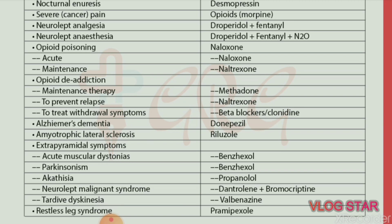Extrapyramidal symptoms. For acute muscular dystonia — drug of choice is benzhexol. Parkinsonism — drug of choice is benzhexol. Akathisia — drug of choice is propranolol. Neuroleptic malignant syndrome — drug of choice is dantrolene plus bromocriptine. Tardive dyskinesia — drug of choice is valbenazine.